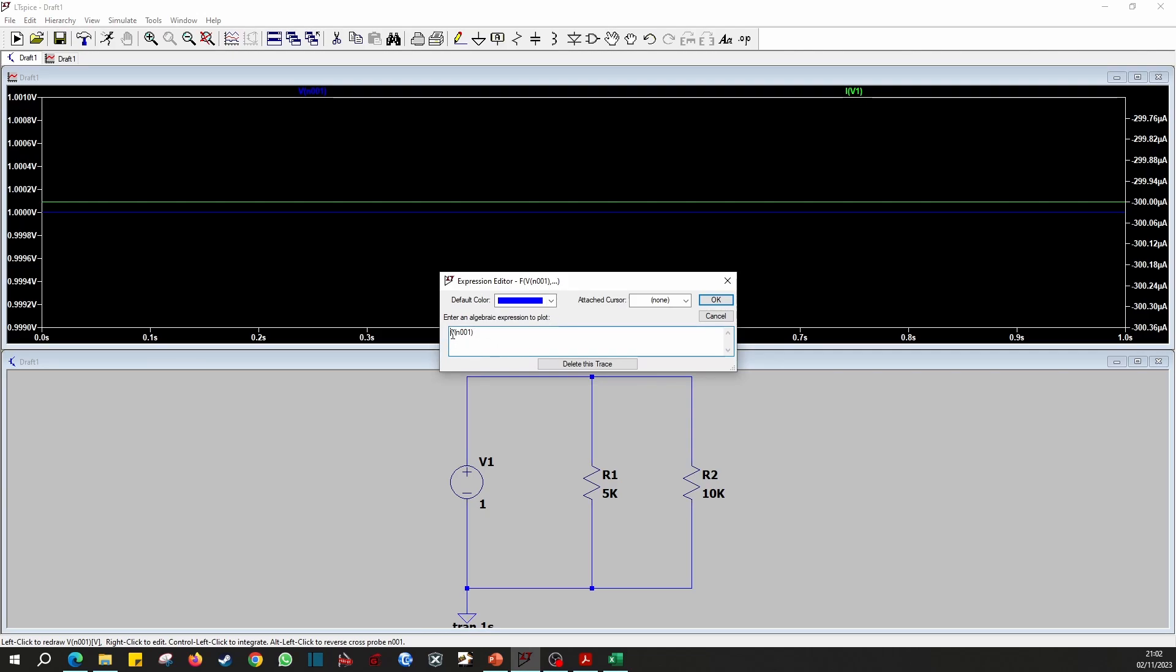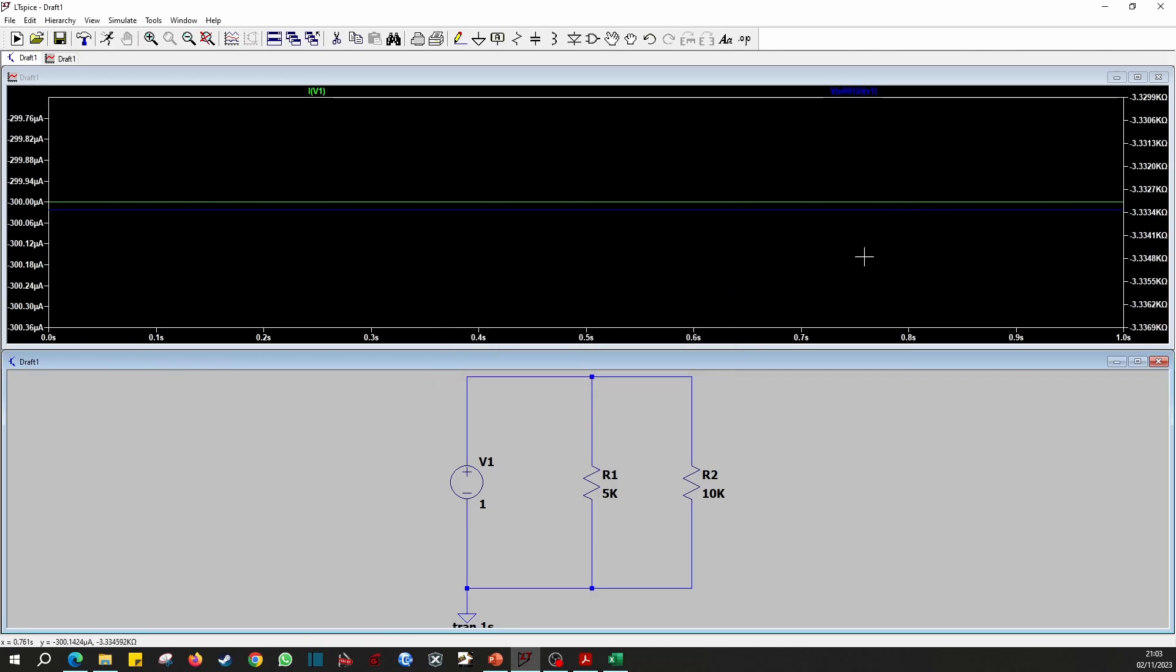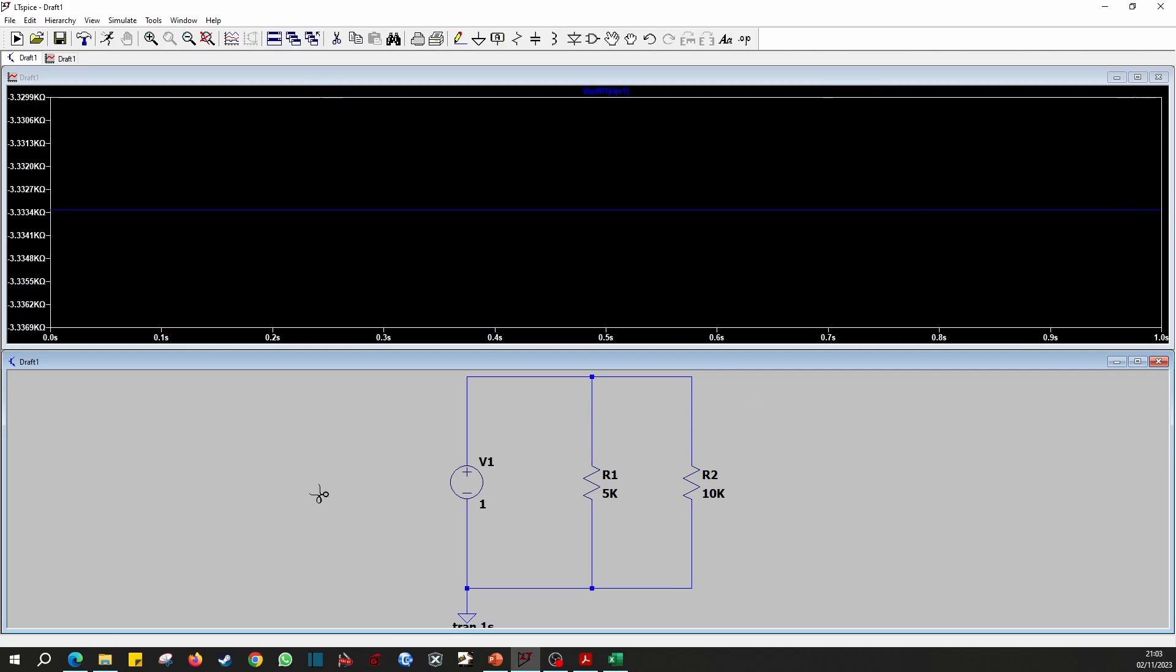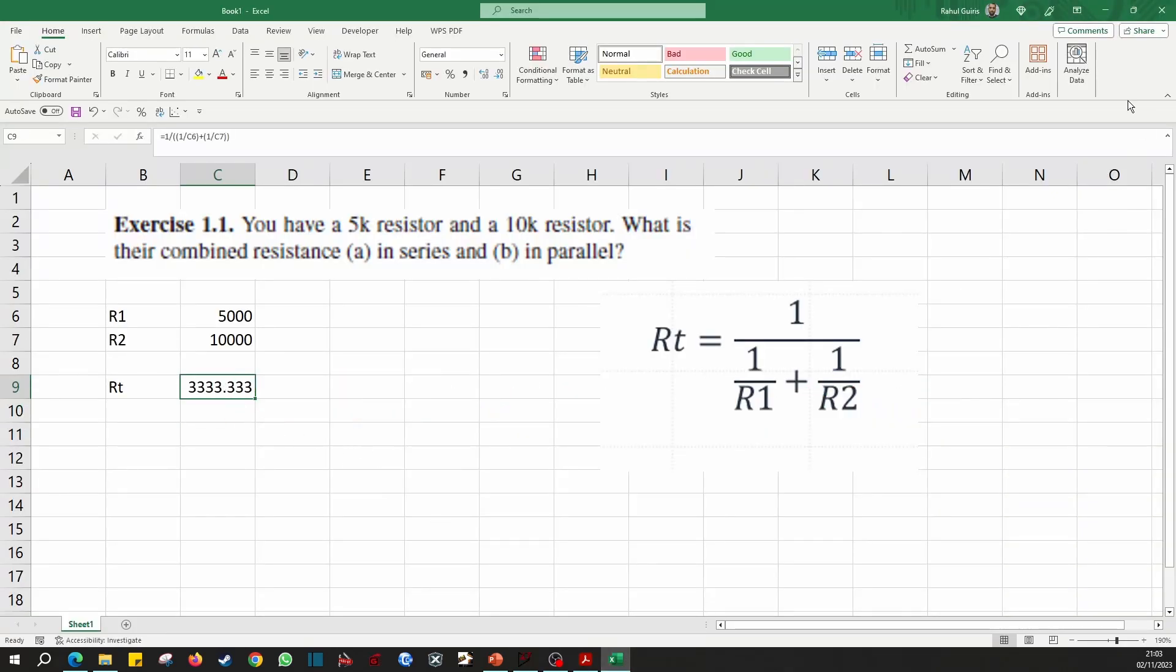So R is equal to V divided by I. If I put that equation in, this gives me the total resistance of the circuit, 3,333 kilo ohms, which is similar to what we found on here.